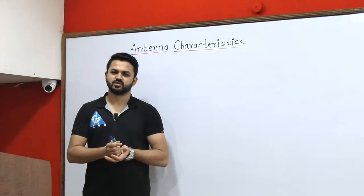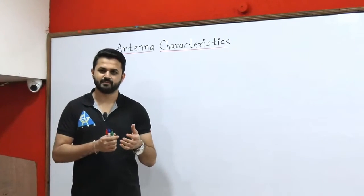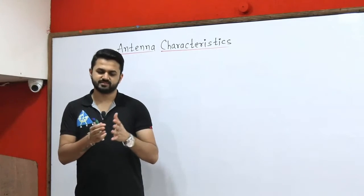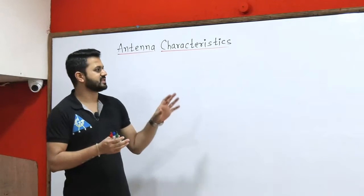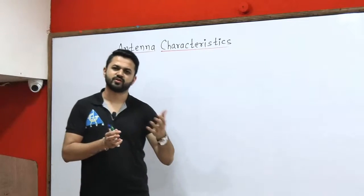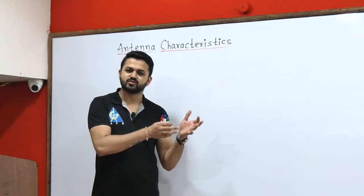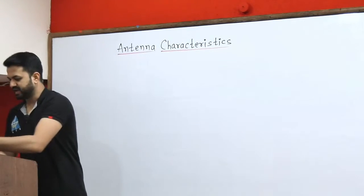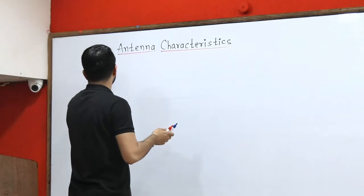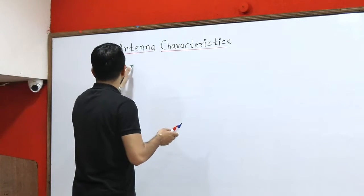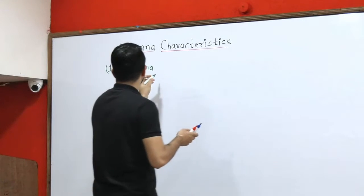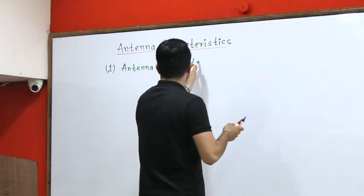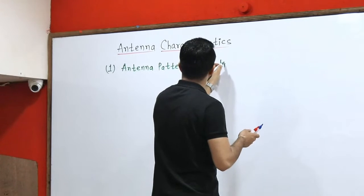Our next topic is antenna characteristics. In this topic we will discuss: antenna pattern, radiation efficiency, gain, power gain, directive gain, antenna aperture area, and efficiency. This topic is very important for the GATE exam because many questions have been asked from it. The first characteristic is antenna pattern, also known as radiation pattern.